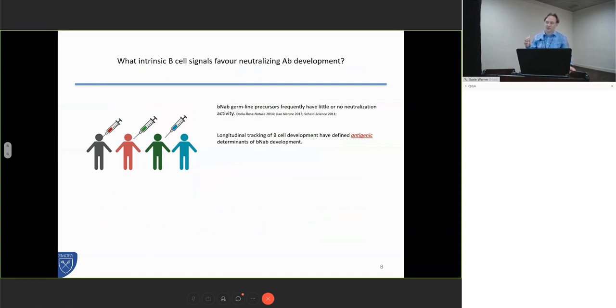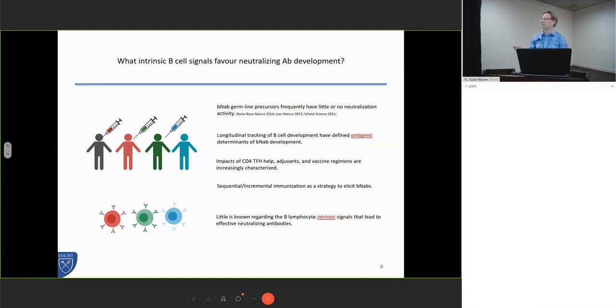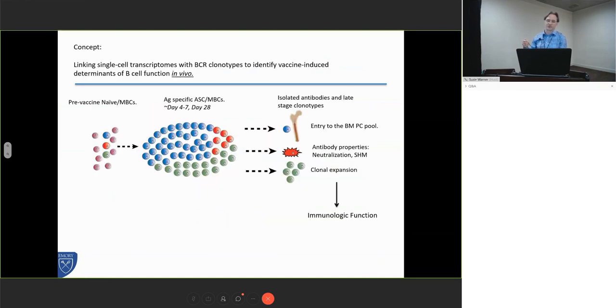A lot of these studies have been elegantly following how the relationship between immunogen and the BCR evolves over time. There's been a lot of work to understand the impact of follicular T cell help, adjuvants, how to get durability. A lot of sequential and incremental immunization strategies have come along to try and nurture the B cell along, but what I felt was missing was that there wasn't a lot known about what was going on in the B cells themselves.